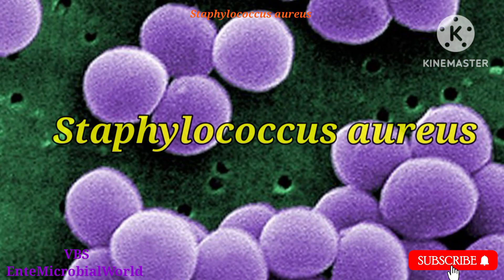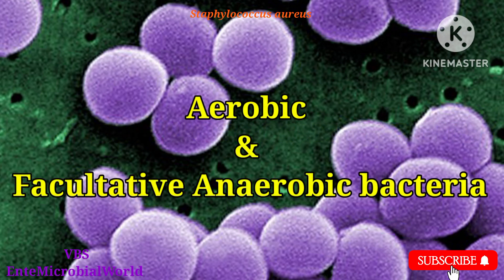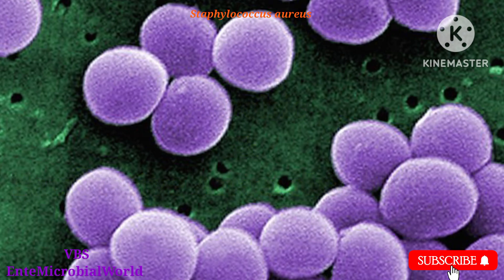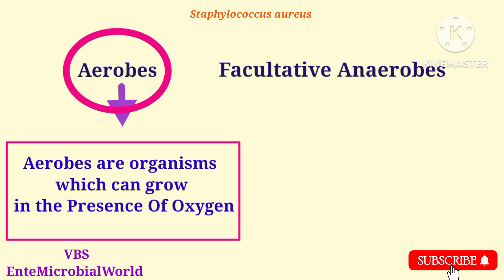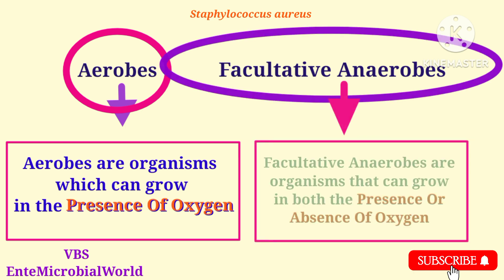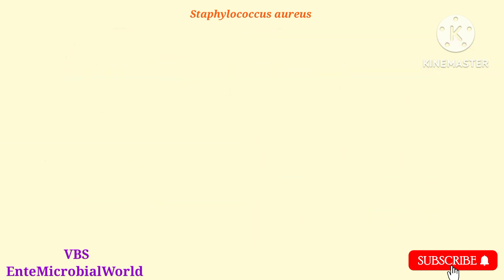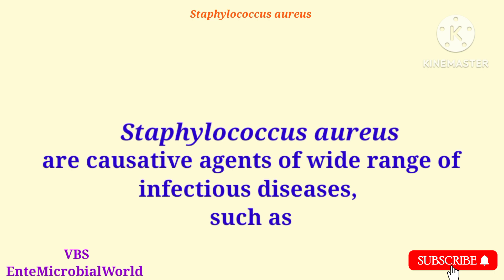Next, we are going to see: is Staphylococcus aureus aerobic or anaerobic bacteria? Staphylococcus aureus are aerobic and facultative anaerobic bacteria. Aerobes are organisms which can grow in the presence of oxygen. Facultative anaerobes are organisms that can grow in both the presence or absence of oxygen.